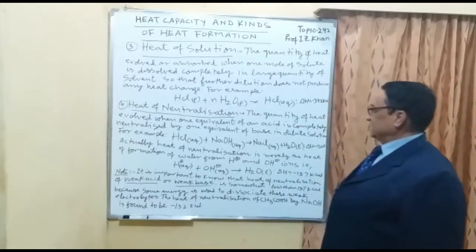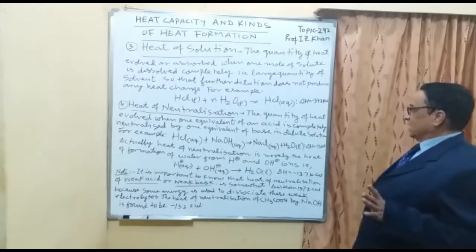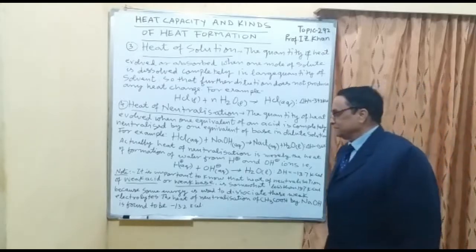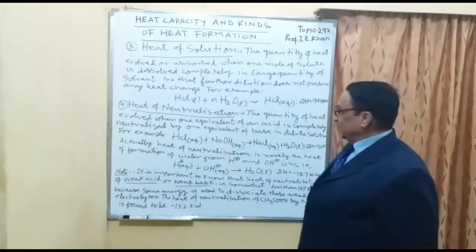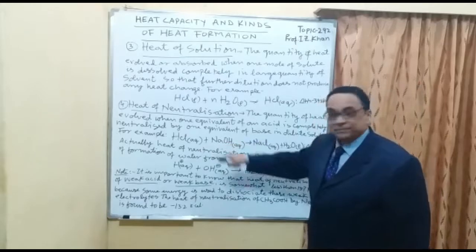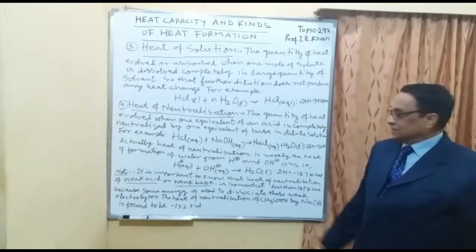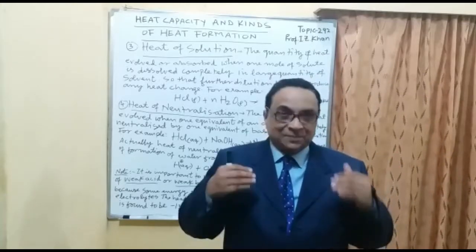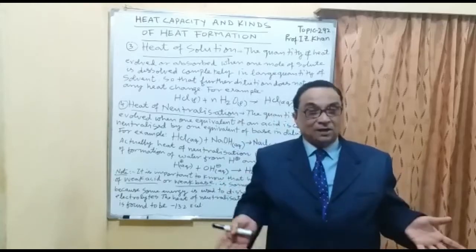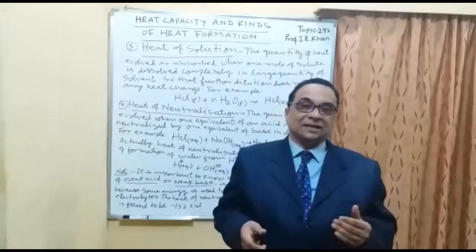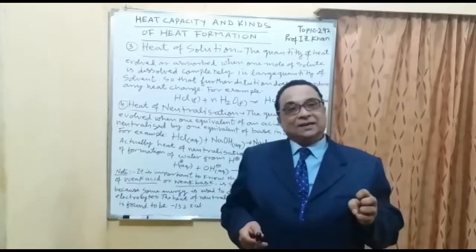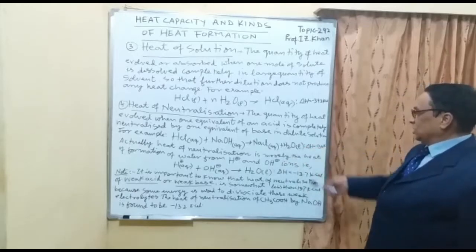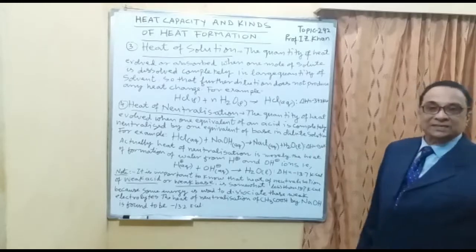Number four is heat of neutralization: the quantity of heat evolved when one equivalent weight of an acid is completely neutralized by one equivalent weight of base in dilute solution. For example, HCl aqueous plus sodium hydroxide aqueous react — both must be in dilute aqueous form. There is an acid-base reaction forming salt NaCl plus H₂O liquid. Delta H equals minus 13.68 kilocalories.